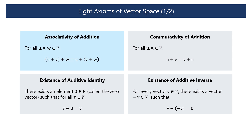Axiom 1 — Associativity of addition: For any vectors u, v, and w in the vector space V, the sum of u and v, when added to w, is the same as u added to the sum of v and w.